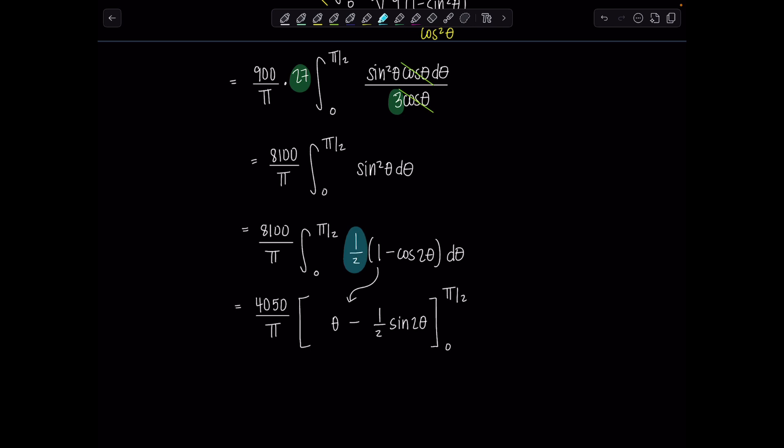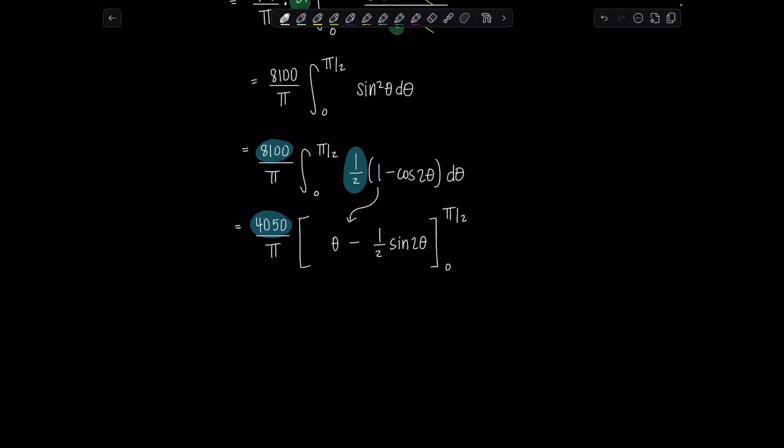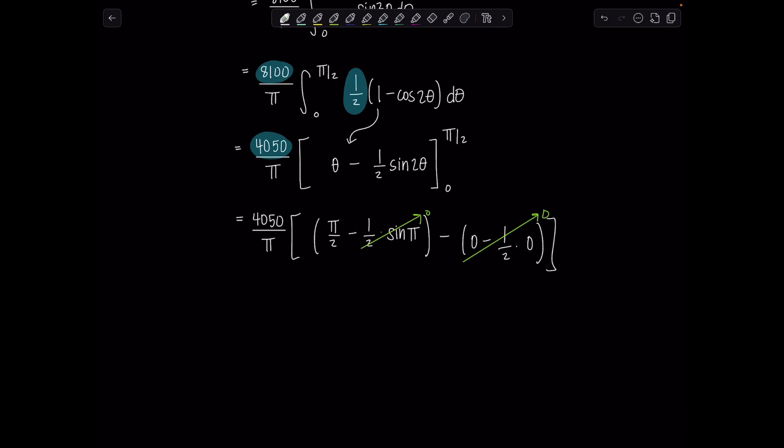So don't freak out. 1 half times 8,100 gave me 4,050, and then just leave the pi down there. We're in the home stretch. So 4,050 over pi, just leave it out there. Upper limit is going to be pi over 2 minus 1 half times sine of 2 times pi over 2, that's pi, minus lower limit is 0 minus 1 half sine of 0, which is 0. We know sine of pi is 0, so this is just 0. This whole thing is 0. So all I'm left with is 4,050 over pi times pi over 2, which gets you 2,025. Yay!